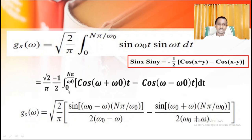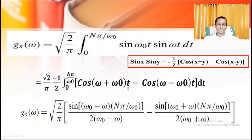For the second term, we have a negative sign. The integral of cos((ω+ω₀)t) = sin((ω+ω₀)t) divided by (ω+ω₀). Applying the limits, sin(0) = 0 at the lower limit, and at the upper limit t = nπ/ω₀ gives sin((ω+ω₀)·nπ/ω₀) divided by (ω+ω₀), with the factor of √(2/π).